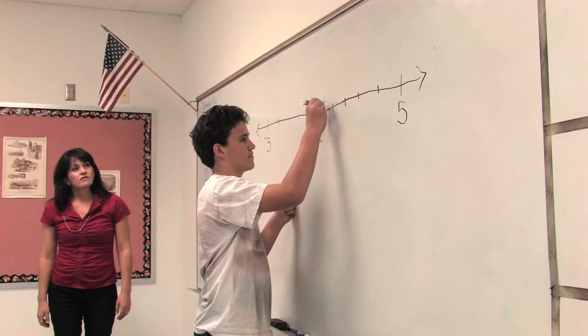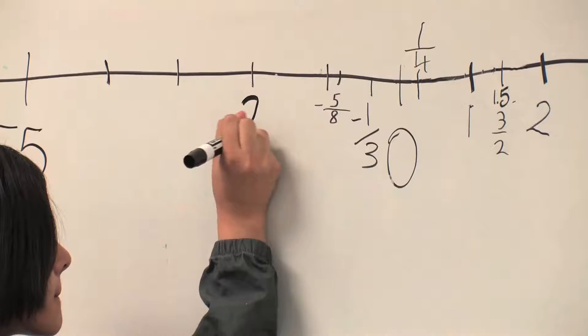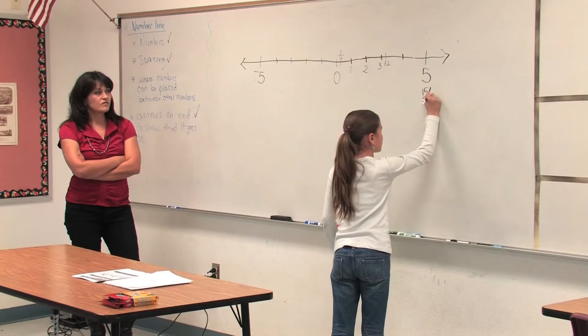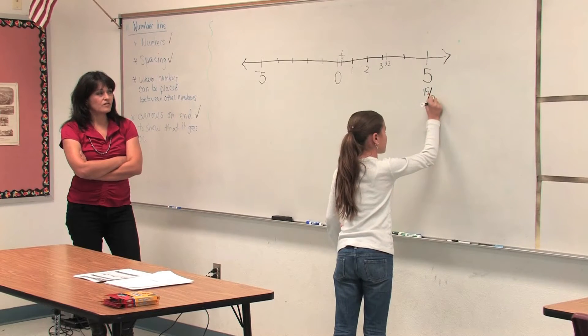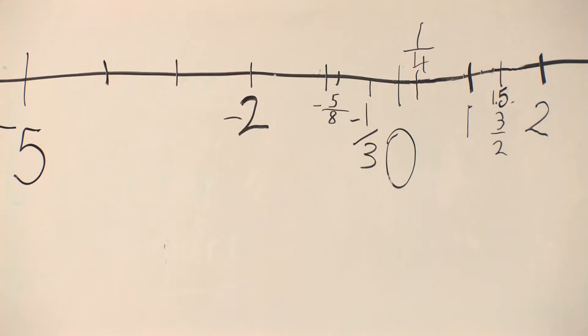Now we're going to take our number line and put it on the board. Each student is going to take their number and place it on the number line, taking into consideration the placement of zero, proper spacing, positive numbers, negative numbers, equivalents, fractions, and decimals. It's a great way to bring it all together.